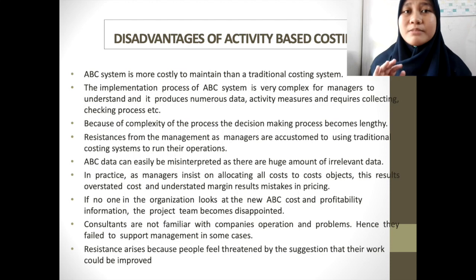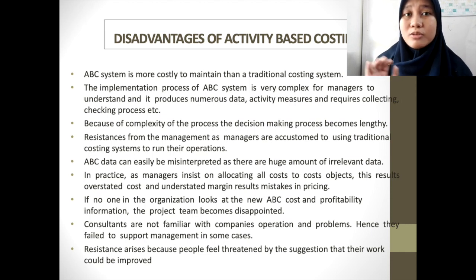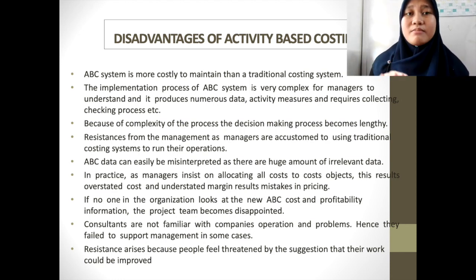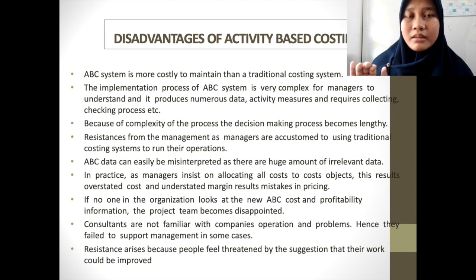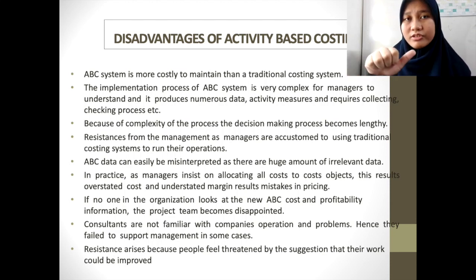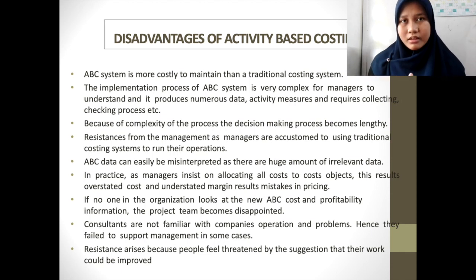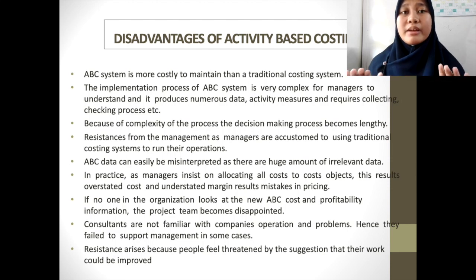Secondly, the implementation process of an ABC system is very complex for managers to understand, and it also produces numerous data, activity measures, and requires collecting and checking processes. The ABC system has numerous cost pools and multiple cost drivers, and therefore it can be more complex than the traditional costing system. Some difficulties in implementation include selection of cost driver, assignment of common cost, and varying the cost driver rate. Because of this complexity, the process of decision making will take a lot of time and become more lengthy.